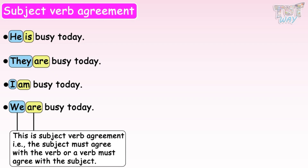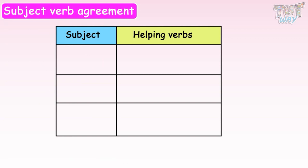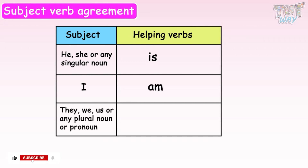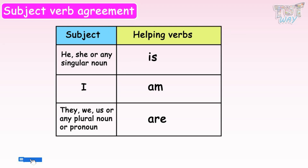We have rules for this. If the subject is singular, like he, she, or any singular noun, we use is with these subjects. And if the subject is I, we use am with it. For plural subjects like they, we, us, or any plural noun or pronoun, we use are with it. That is, the subject and the verb must agree with each other. So this is about the helping verbs.